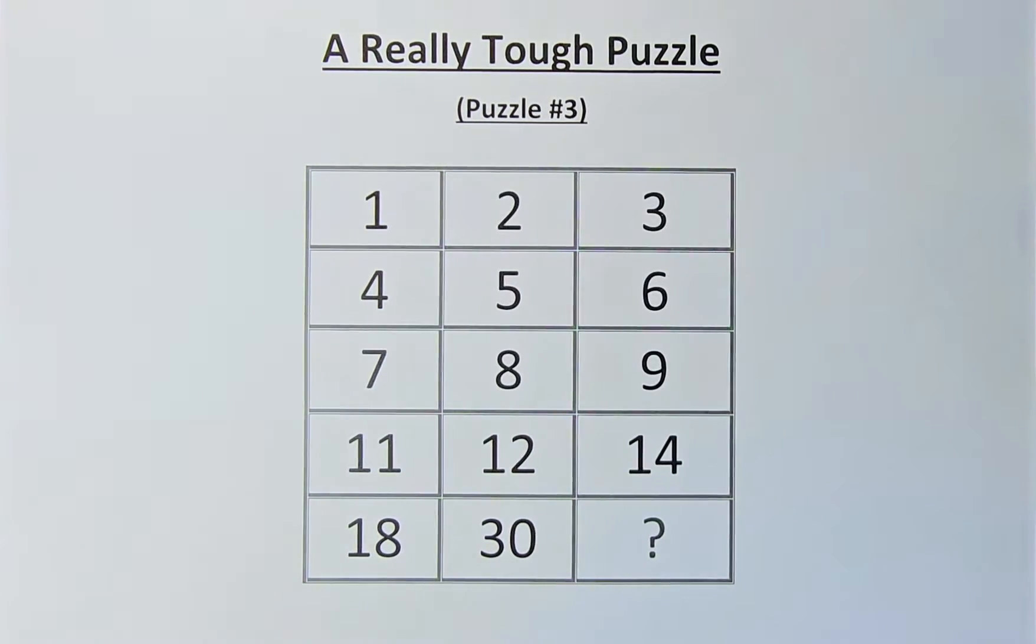Welcome back to the solution of this really tough maths puzzle. As a reminder: row 1 has 1, 2, 3; row 2 has 4, 5, 6; row 3 has 7, 8, 9; row 4 has 11, 12, 14; and the final row has 18, 30, and a question mark.